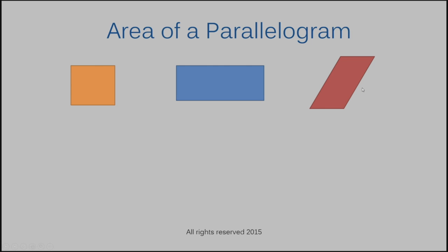The formula that we use to find the area of a parallelogram is area equals base times height. And that's just going to look like A equals BH. You're going to multiply the base and the height together.